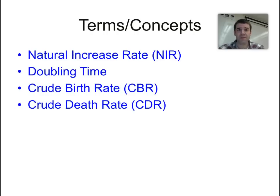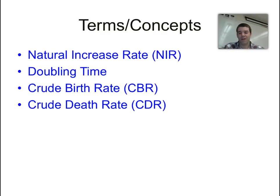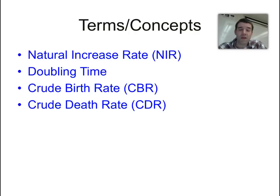The terms and concepts in this video are going to be natural increase rate, doubling time, crude birth rate, and crude death rate. These are pretty standard statistics that geographers use to help understand the constantly changing population of our world.